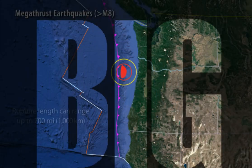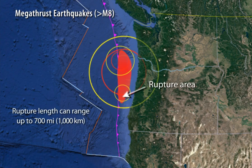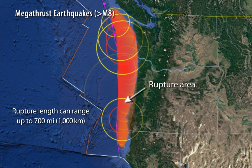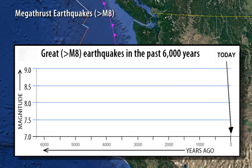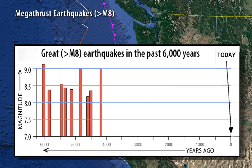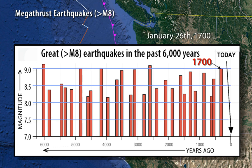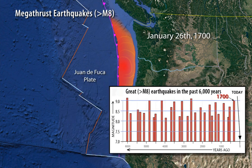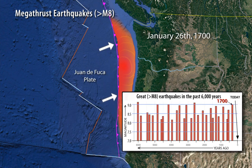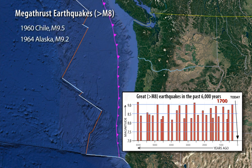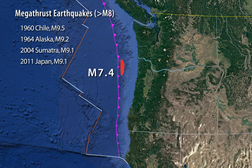What about the big one? Although they are rare, megathrust earthquakes can have the greatest impact. Earthquakes greater than magnitude 8 rupture the Cascadia subduction zone on average every 300 to 500 years. The last one occurred on January 26, 1700, when a magnitude 9 megathrust earthquake ruptured the full length of the plate boundary where the Juan de Fuca Plate subducts beneath the North American Plate. Megathrust earthquakes, like those that have occurred in Chile, Alaska, Sumatra, and Japan, often start offshore and rupture for several minutes along the fault surface as the magnitude increases.